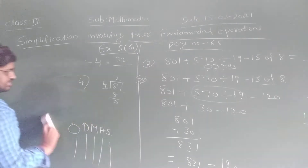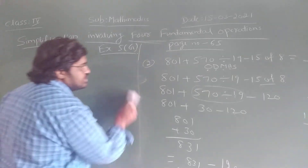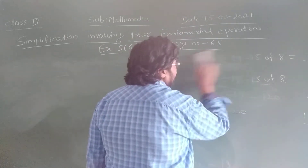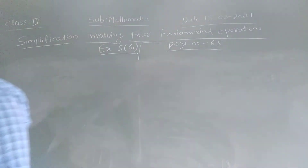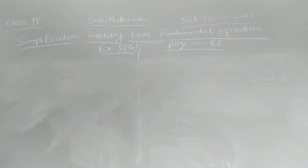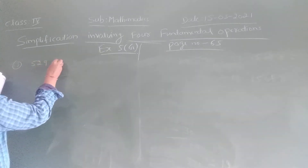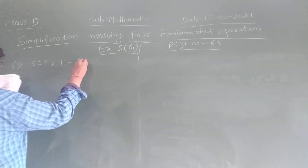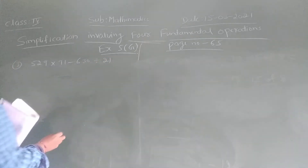Now similarly, I am going to solve the third sum. In this exercise, you have to remember O, D, M, A, S for all the sums. You have to remember the rule and maintain the order: O, D, M, A, S. The third one is: 529 into 71 minus 630 divided by 21. Easy question.